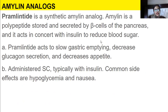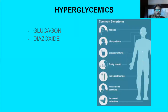Then we have amylin analogs. In this class, we have pramlintide, a synthetic amylin analog. Amylin is a polypeptide stored and secreted by the beta cells of the pancreas, and it acts in concert with insulin to reduce blood glucose. It acts to slow gastric emptying, decrease glucagon secretion, and decrease appetite. It is administered subcutaneously, typically with insulin. Common side effects are hypoglycemia and nausea.